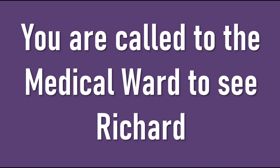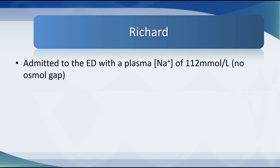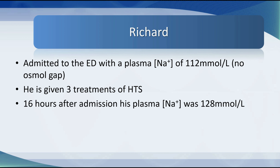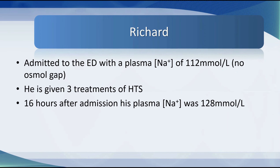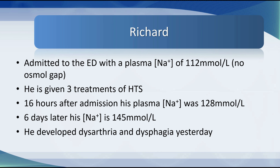You are called to see Richard on the medical ward seven days after his original admission. He came in with a sodium of 112 with no osmol gap and received three treatments of hypertonic saline. Sixteen hours after admission, his plasma sodium was 128 millimoles per litre — that is 16 above where he started. Six days later, his sodium is 145 millimoles per litre.